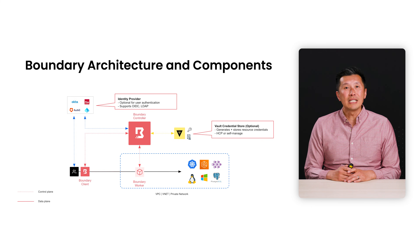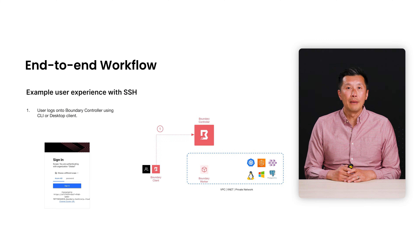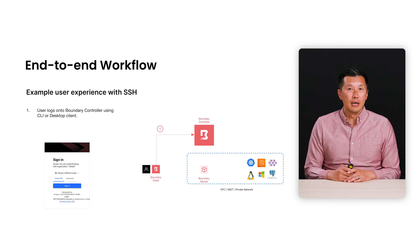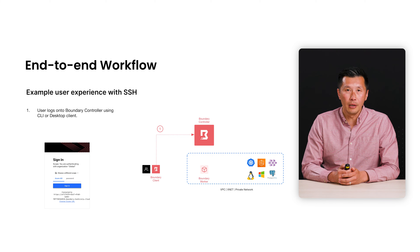In the end, all of these components should really be invisible to the end user except for the Boundary client itself. Let's walk through an example of what happens when users connect via SSH to a Linux host. The first thing they would do is use their client to authenticate themselves with Boundary — I'm showing the desktop UI as the example here.